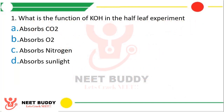Question number one. What is the function of KOH, that is potassium hydroxide, in the half leaf experiment? Option A: Absorbs carbon dioxide. Option B: Absorbs oxygen. Option C: Absorbs nitrogen. Option D: Absorbs sunlight.